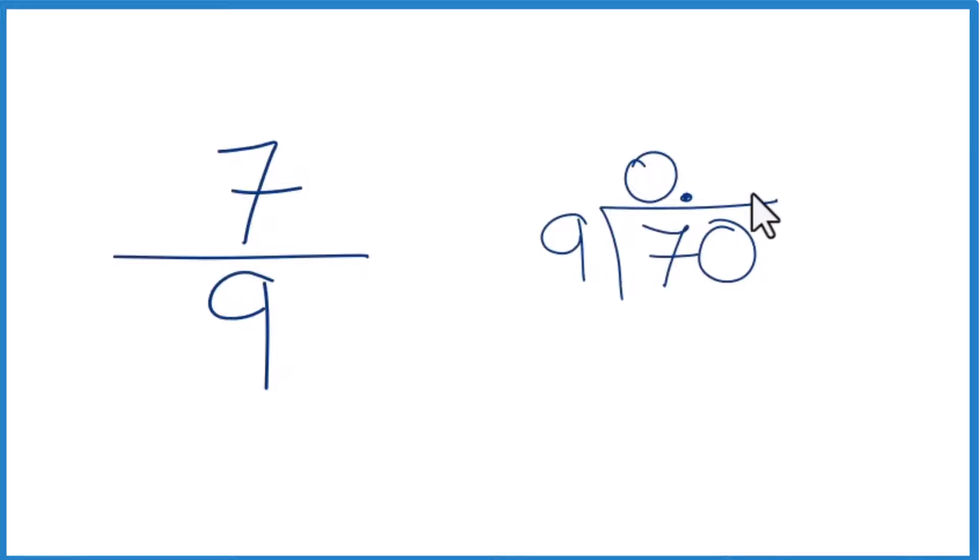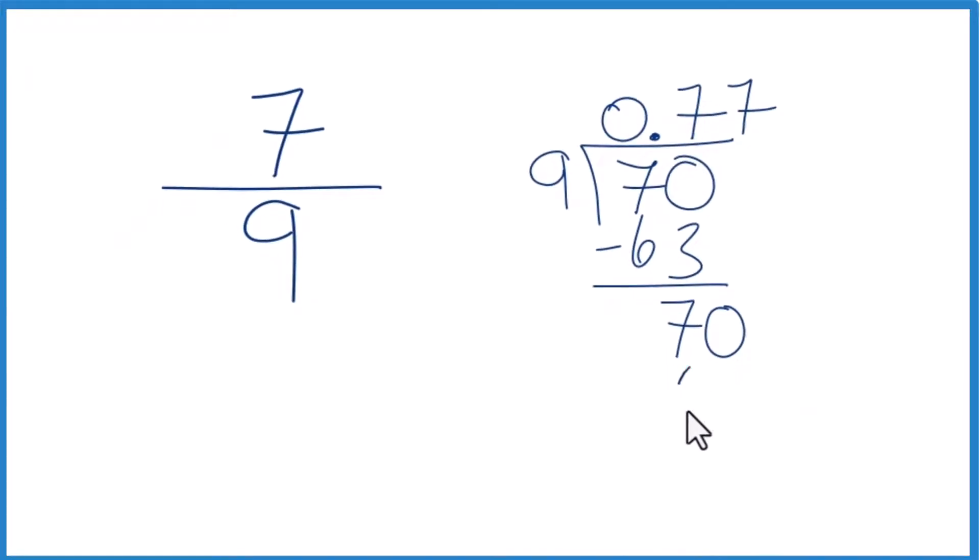So 9 times 7, that's 63. We subtract, we get 7. So we could call it 70 again and just move over 1. 7 times 9, that's 63. Subtract, we get 7.